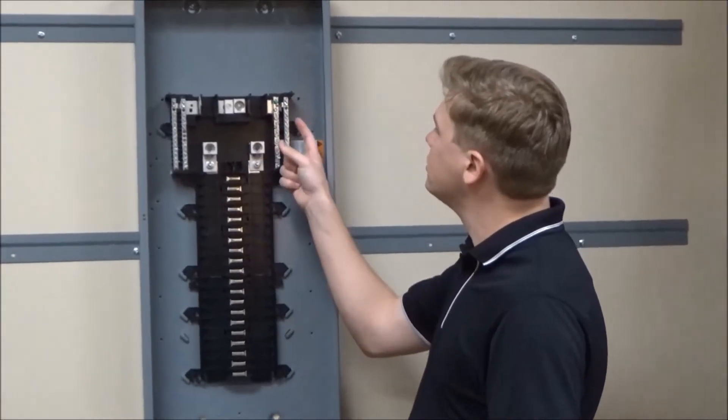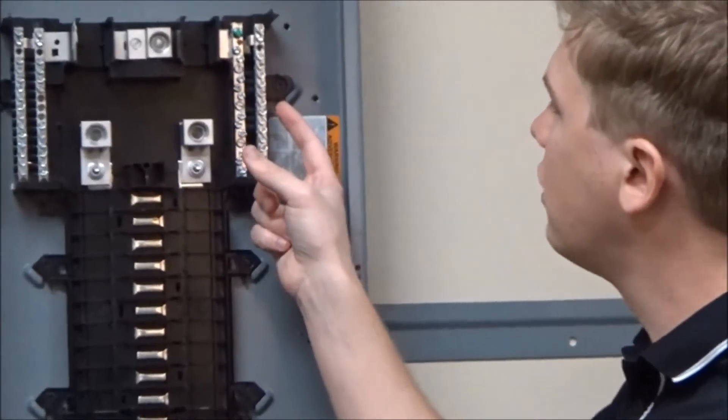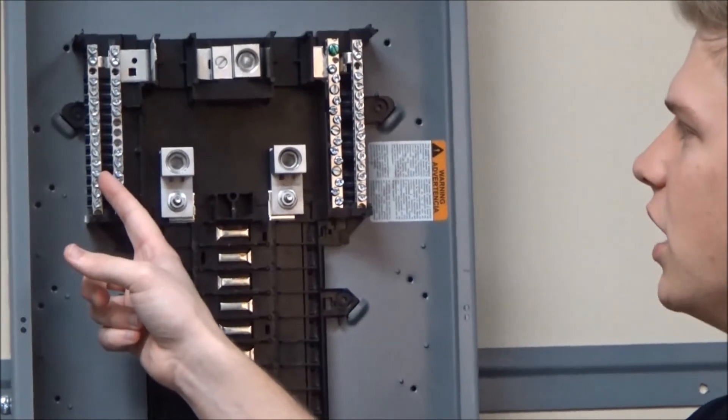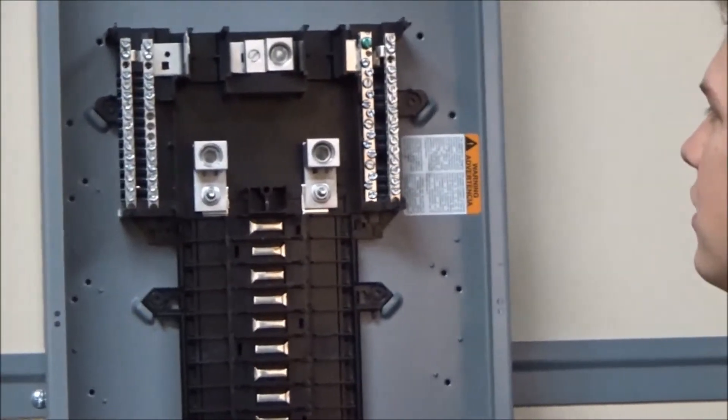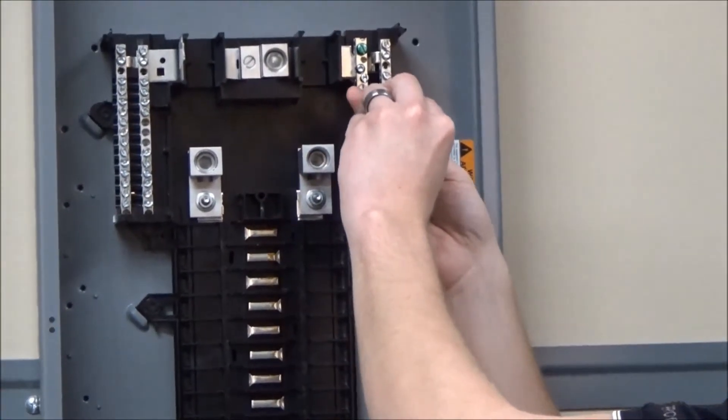Locate four adjacent wire binding screws on one of the outer two neutral bars of the load center and then loosen the top and bottom wire binding screw.